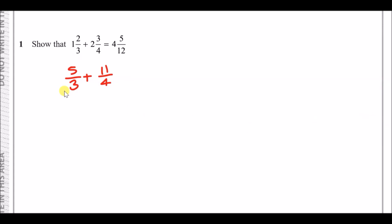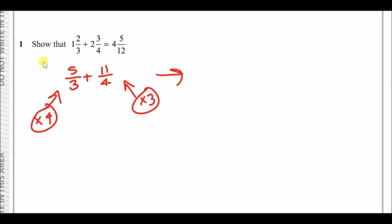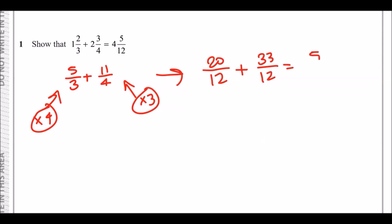Now all we want to do is make common denominators. We know the end goal denominator is 12. To get the left fraction to 12, multiply top and bottom by 4. To get the right fraction to 12, multiply top and bottom by 3. Doing so gives 20/12 plus 33/12. Adding the numerators gives 53/12, and converting to a mixed fraction gives 4 and 5/12. Easy.